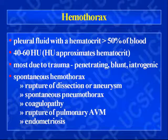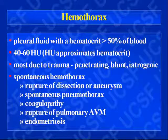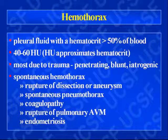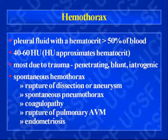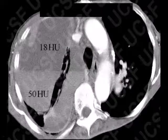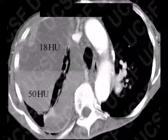One exception is hemothorax. Hemothorax is pleural fluid with a hematocrit more than 50% of blood — blood is usually 40 to 60 Hounsfield units, which approximates the patient's hematocrit. Pleural fluid that is 40 to 60 Hounsfield units is a hemothorax. Most are due to trauma. Spontaneous hemothorax can occur from rupture of a vascular structure, spontaneous pneumothorax with bleeding, coagulopathy, rupture of a pulmonary AVM, or endometriosis. Here is a traumatic hemothorax with a fluid-fluid level: 18 Hounsfield units anteriorly with all the blood sitting posteriorly at 50 Hounsfield units.